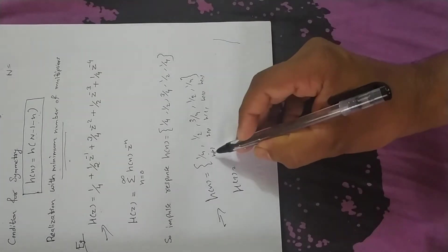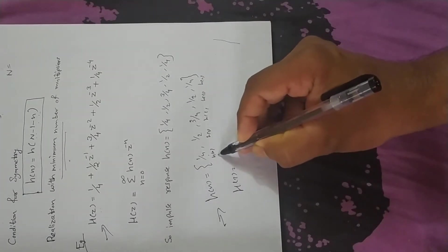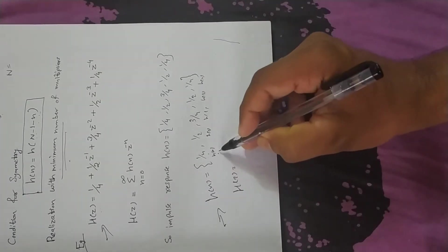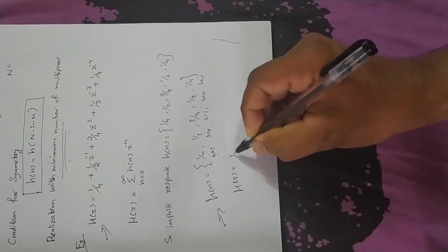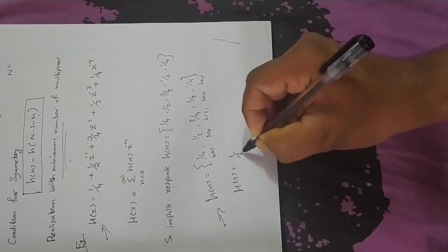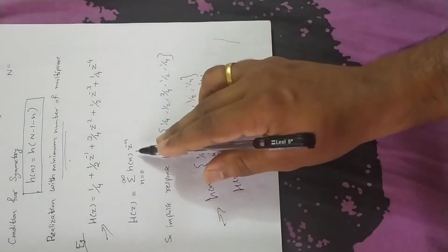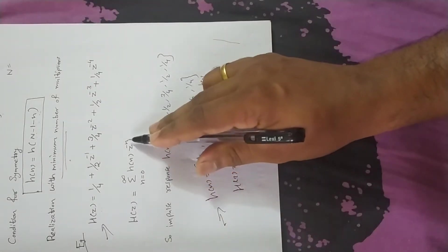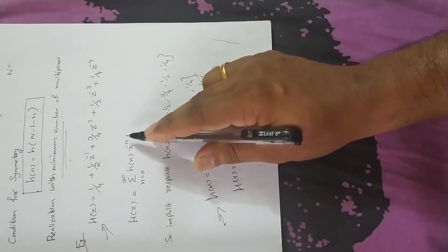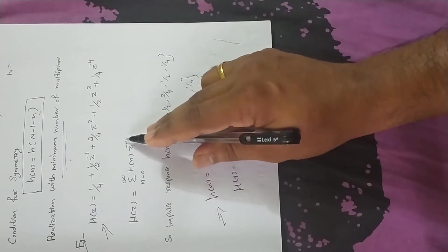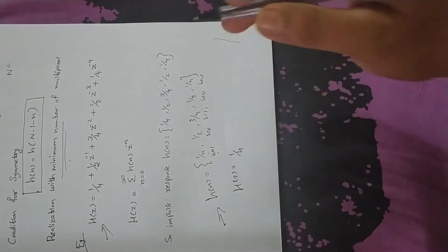Okay, first: h(0) is not h(0) by itself. h(0) term is 1/4. x raised to minus n, n value is 0, so z raised to 0 is 1.